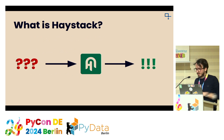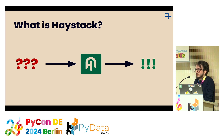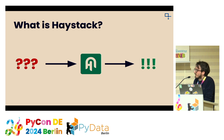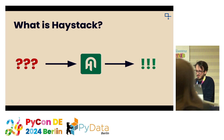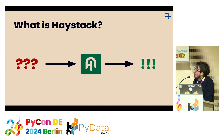So what is Haystack? Haystack is a plain open source Python framework that you can use to build your own NLP pipelines. We've been around for a while. When it started, it was just a framework to build question-answering and document retrieval pipelines — the usual NLP stuff before LLMs became huge — then we added that to the framework too. And it obviously evolved over time, and that's one of the reasons why we also took the challenge of a rewrite.